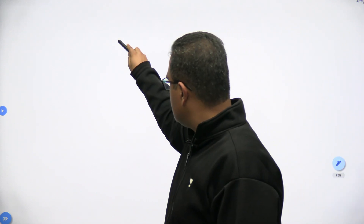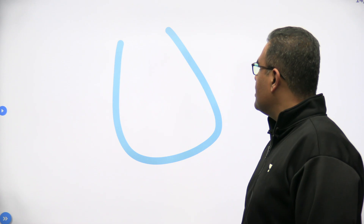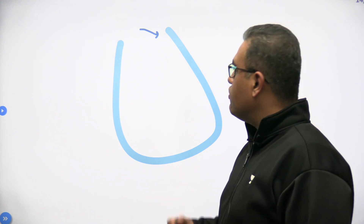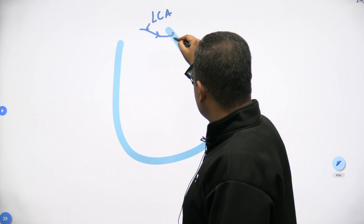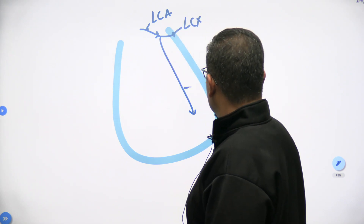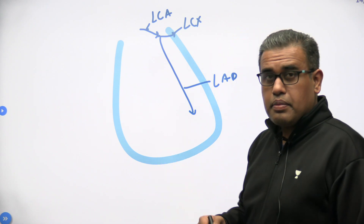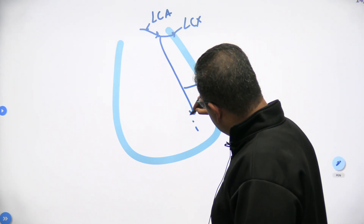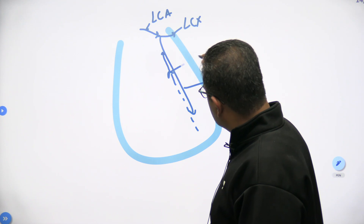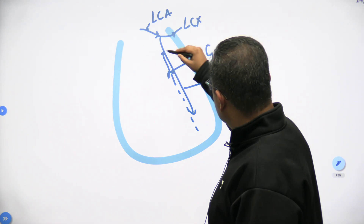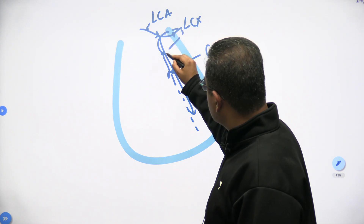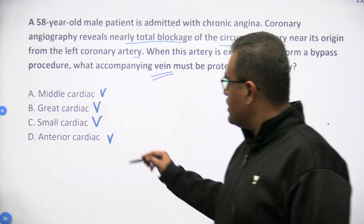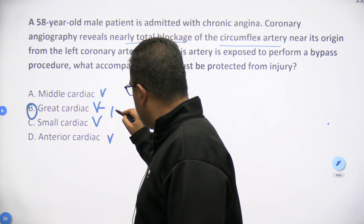Let us look at the heart. The LCA comes from the ascending aorta, from the left posterior aortic sinus. The LCA bifurcates into the LCX — left circumflex — and the LAD — left anterior descending or anterior interventricular artery. With the LAD, there is a vein also going in the opposite direction: the great cardiac vein. It then turns and passes along with the LCX to finally drain into the coronary sinus posteriorly, and then into the right atrium.